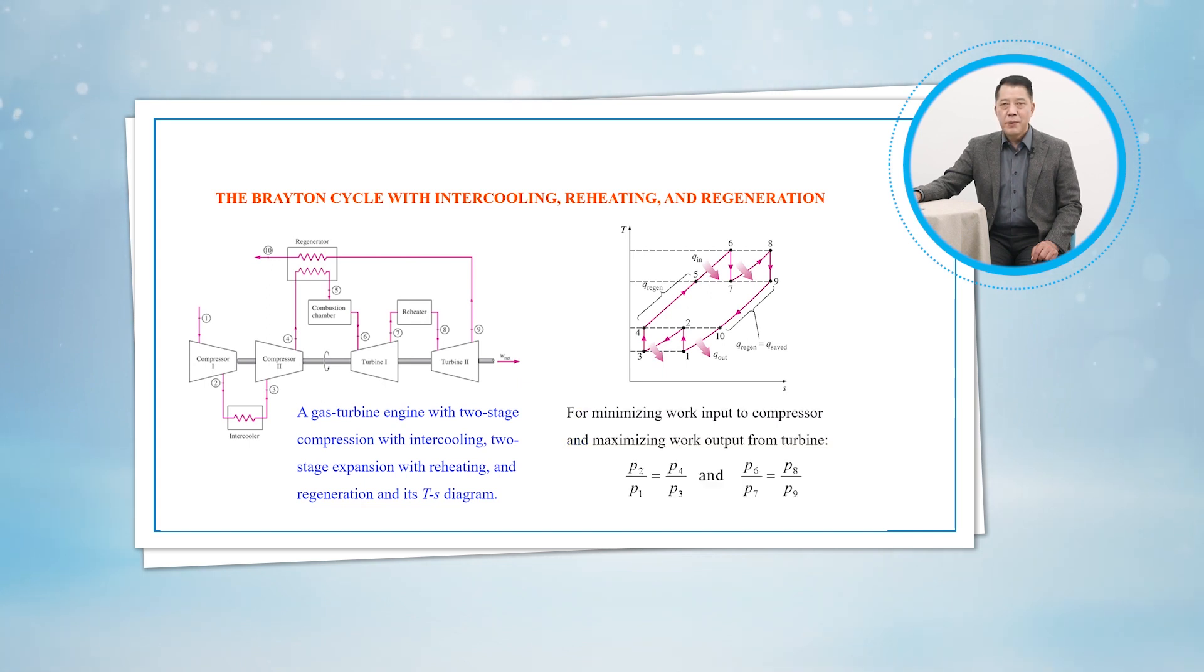The work input to a two-stage compressor is minimized when equal pressure ratios are maintained across each stage. It can be shown that this procedure also maximizes the turbine work output.